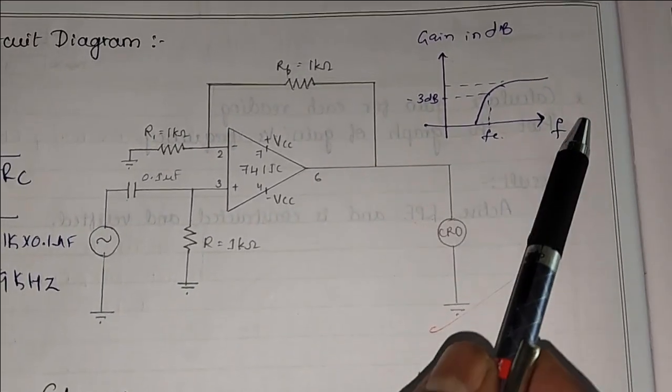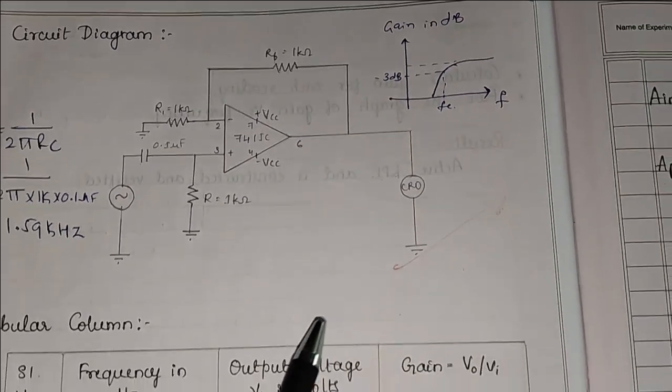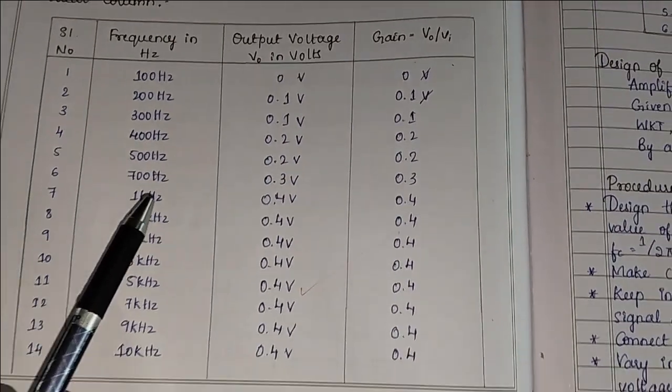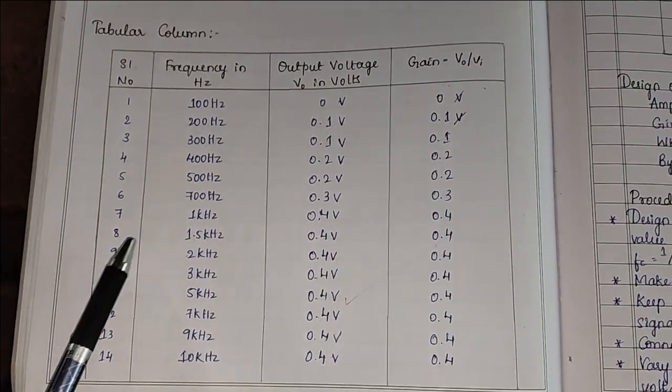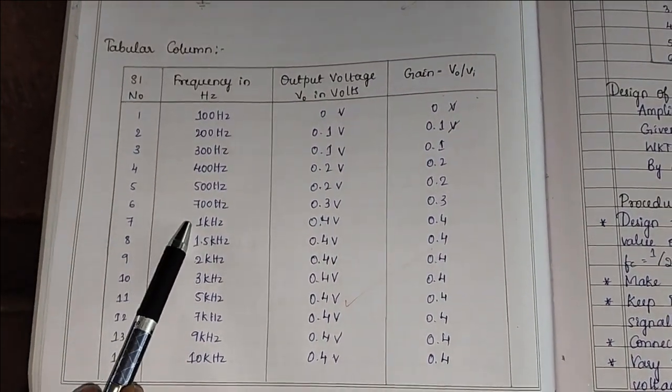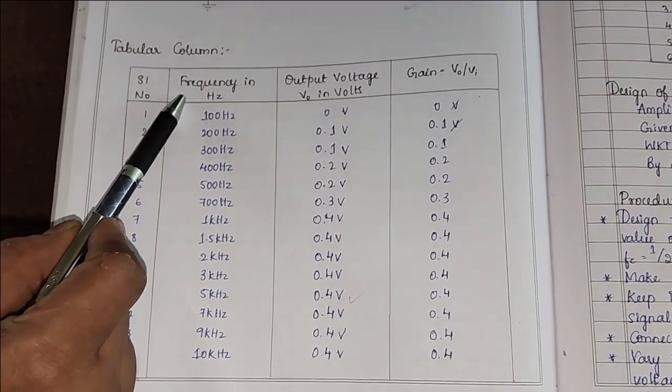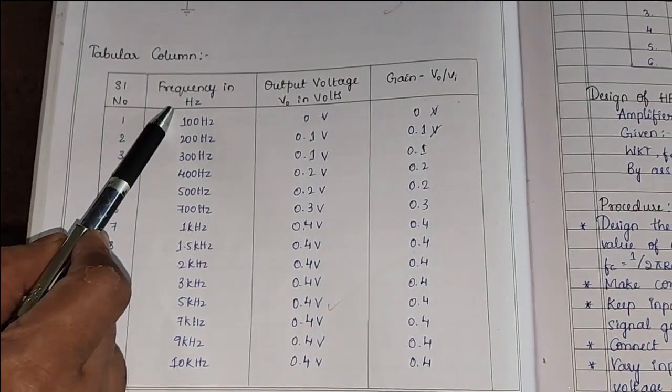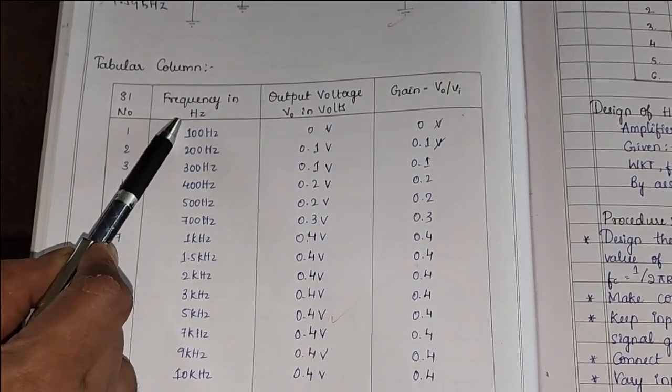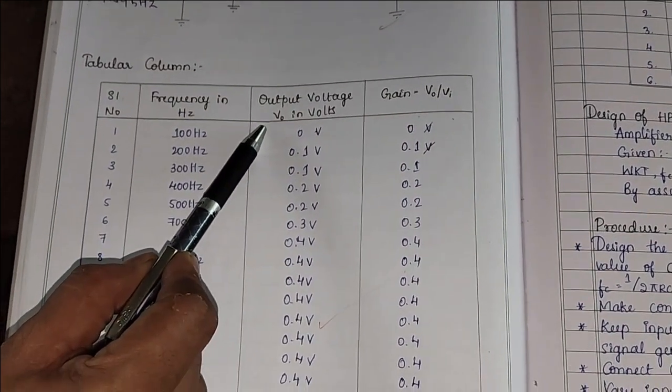This is the graph of the high pass filter. For the sake of convenience we have noted down some readings. In this tabular column we can observe that this is applied frequency. We are applying this frequency from function generator. And this is output voltage.